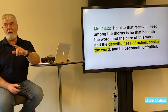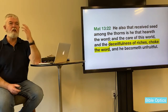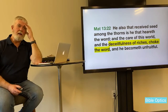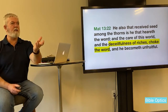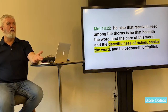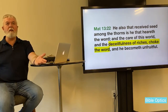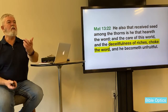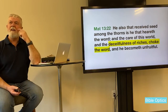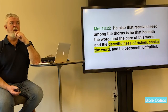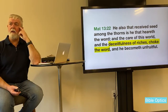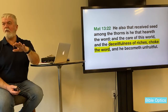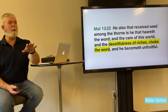He walked away, and the Bible says Jesus was sorrowful. The disciples looked at Jesus and said: what about us? We've given up mothers, fathers, lands, houses, business — the whole lot to follow you. And Jesus made the statement: it's easier for a camel to come through the eye of a needle than for a rich man to enter the kingdom. He didn't say it was impossible — he never said rich people can't enter the kingdom.